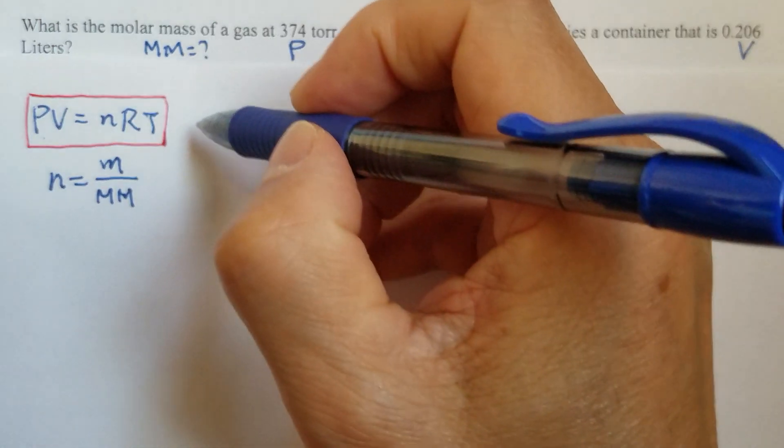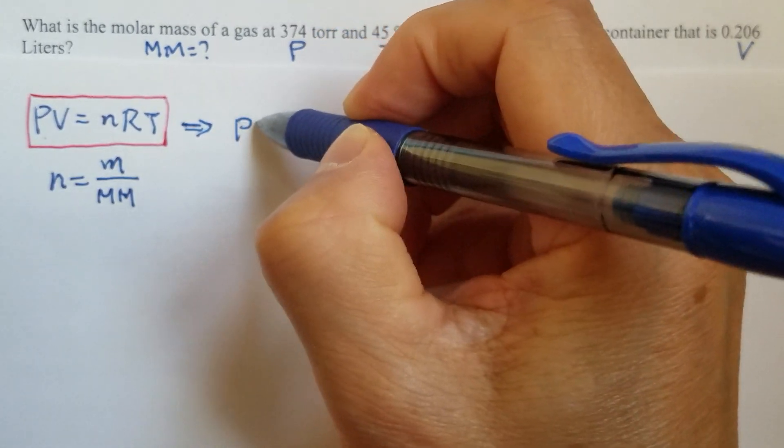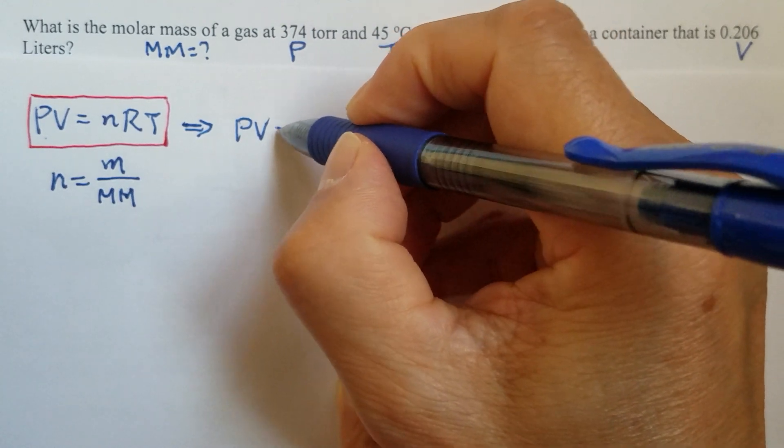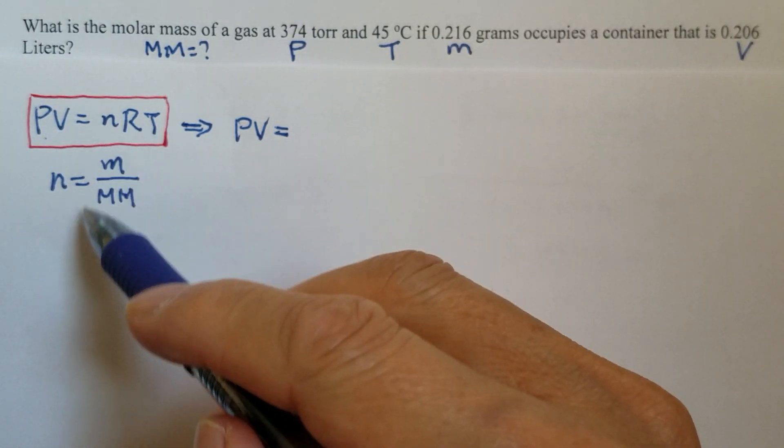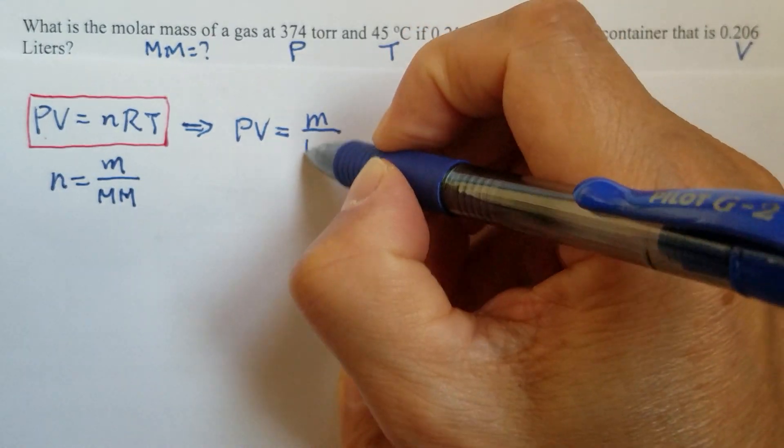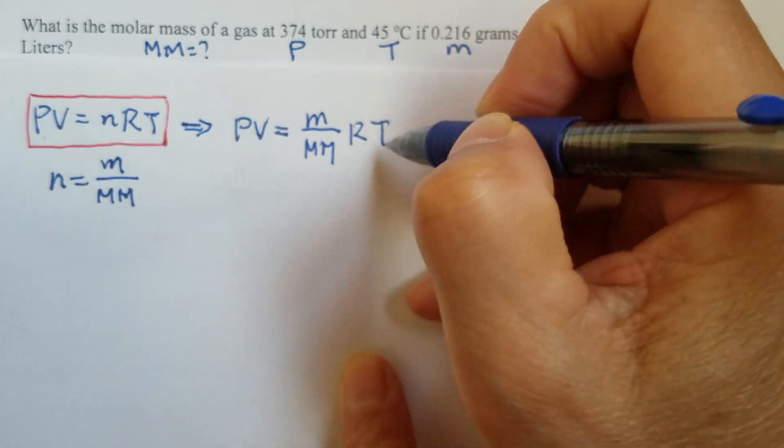Then we can rewrite this ideal gas law equation by replacing n with m over the molar mass times RT.